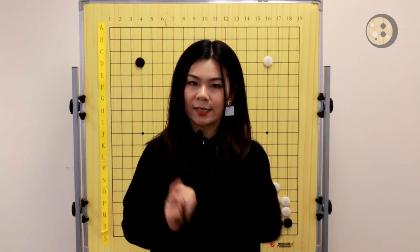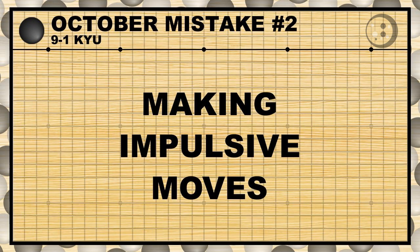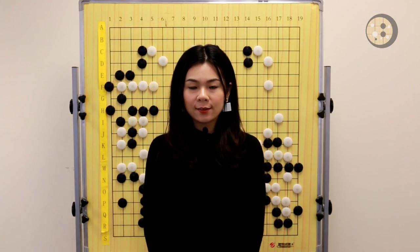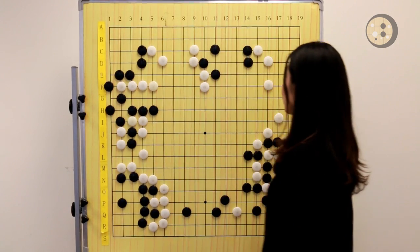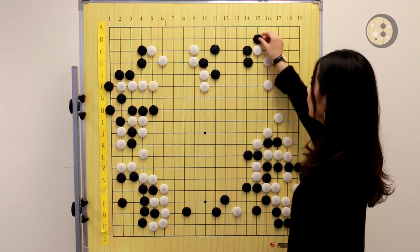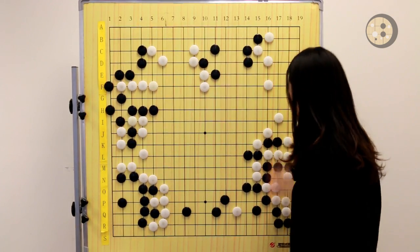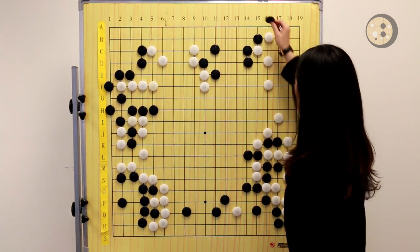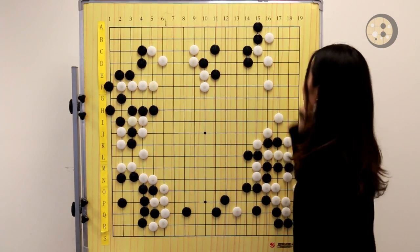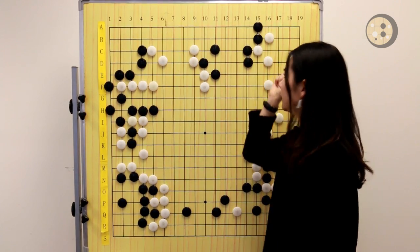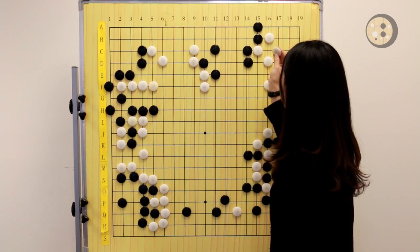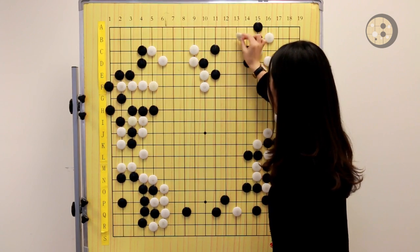Now let's move to the second mistake. The next mistake is an impulsive move. In the actual game, black was looking for more eye space on top and played a hane, white blocks — that's normal — and black descended here. Descending here is not a very good move, because there is some weakness here. For example, if white peeps here, black connects, and white is now able to connect the two stones with the group on the left because there's an atari move here.